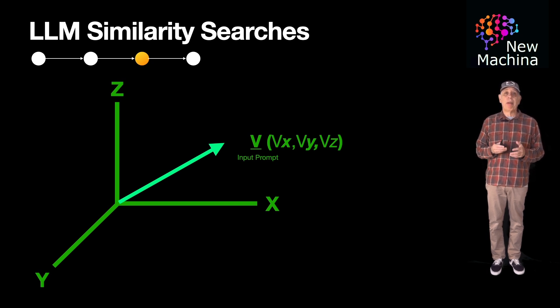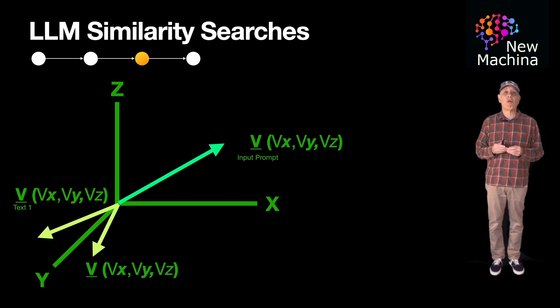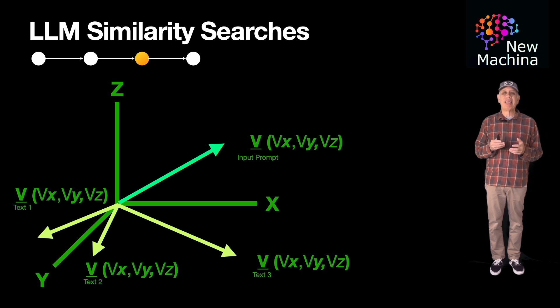Now, the LLM can compare the embedding from the input prompt with all the embeddings for all the text documents in the store, enabling it to return embeddings which are the most similar. So, mathematically, how does the LLM do this?